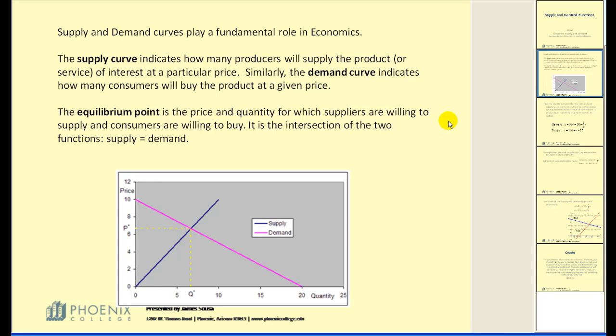The equilibrium point is the price and quantity for which suppliers are willing to supply and consumers are willing to buy. It is the intersection of the two functions: supply equals demand.